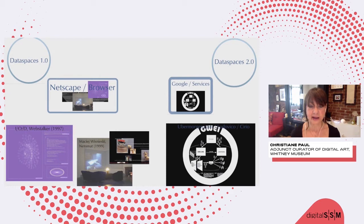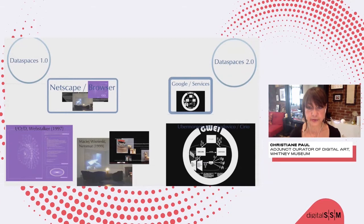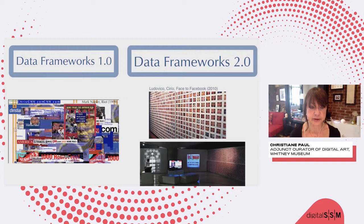In Web 2.0, this became more of an intervention into platforms such as Google. Paolo Cirio, Alessandro Ludovico, and Ubermorgen did a whole series of works where they interfered in those platforms — for example, in Google Will Eat Itself, doing an intervention where you would buy ads through Google AdSense and then invest them into Google stock, following the idea of Google eating itself through being taken over. Obviously this is more of a conceptual proposition.